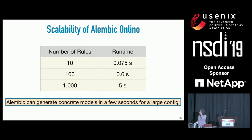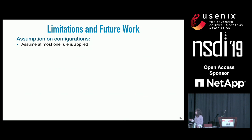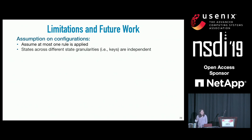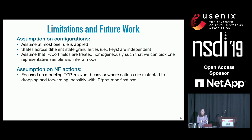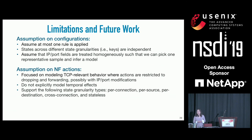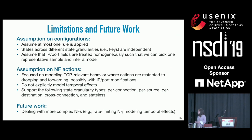For scalability, as we increase the number of rules the runtime increases, but for a config with 1,000 rules we can respond within five seconds. There are also certain limitations: we assume at most one rule is applied, states across different keys are independent, and we can learn a symbolic model from representative samples. We model only TCP-relevant behavior where the NF can modify IP/port, forward, or drop packets. We do not explicitly model temporal behavior, and we support only five types of state granularity. Interesting future work includes handling more complex NFs beyond packet-in/packet-out semantics.